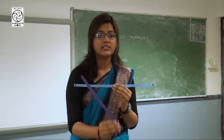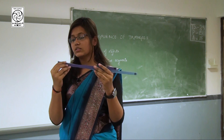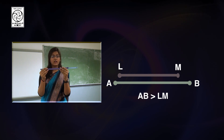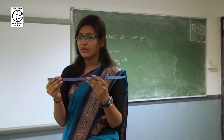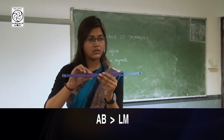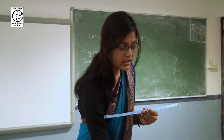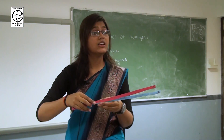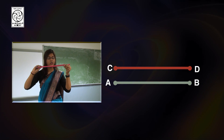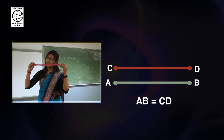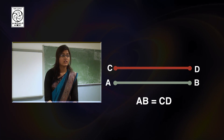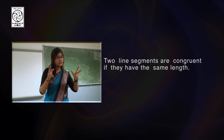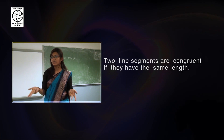Suppose I take another line segment LM and try to superimpose it on the first one. Am I able to do this? No, because they are not equal — this one seems to be longer. Similarly, if I take a smaller line segment, I cannot superimpose it. But if I take a line segment of equal length, you are not able to see the first line segment through it — they are congruent. So all line segments that have the same length are congruent, and vice versa.